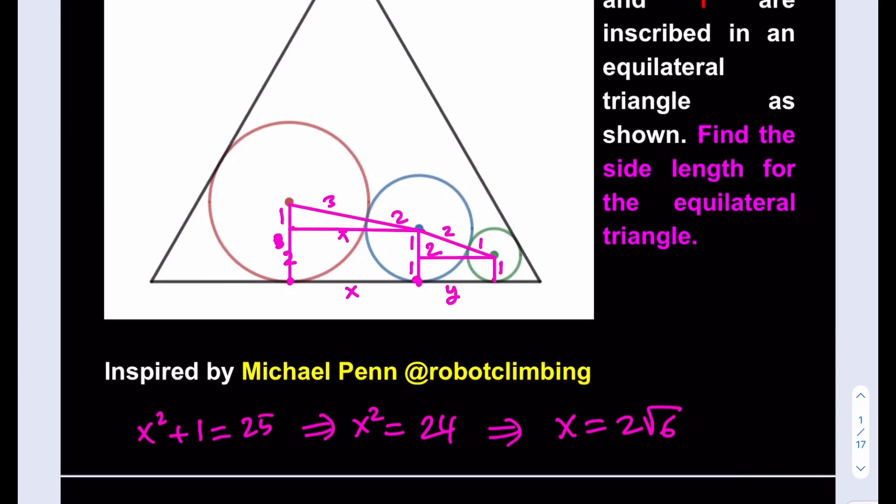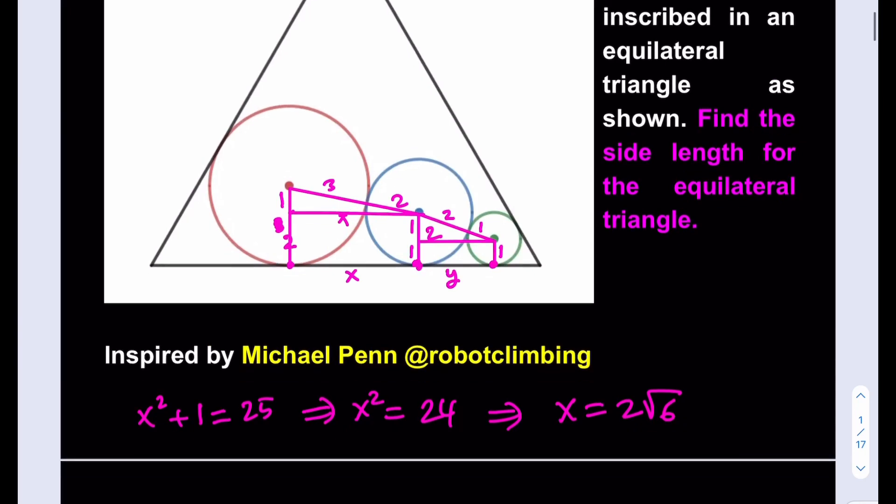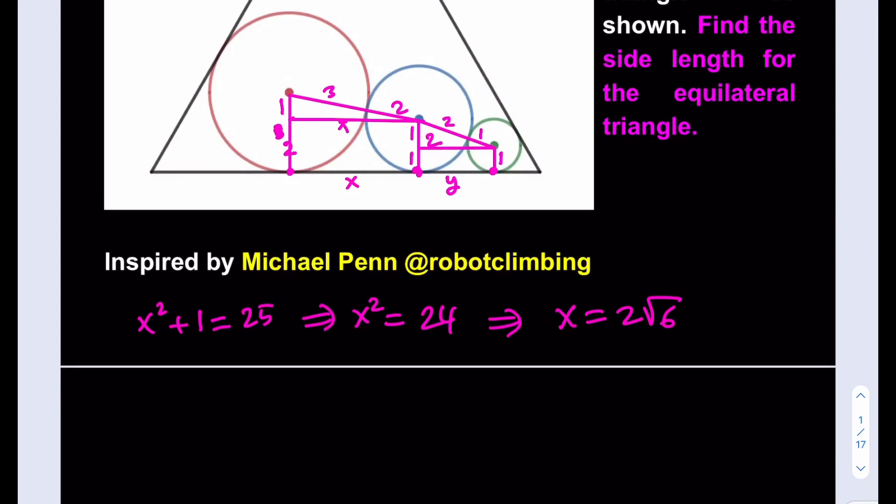If you call this length y, you can just go ahead and write this relationship: y² + 1 = 3², which is 9. From there we get y² = 8, which implies y = 2√2.